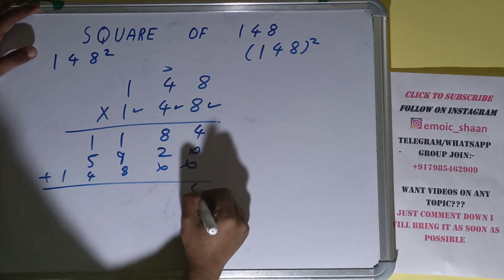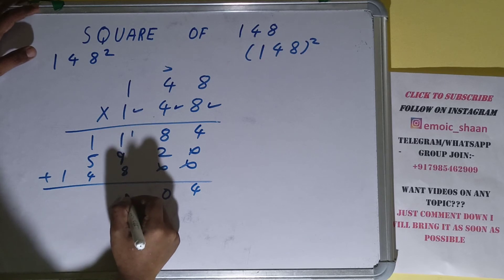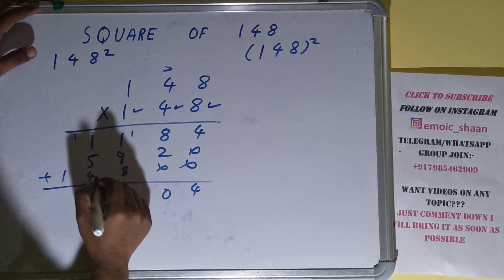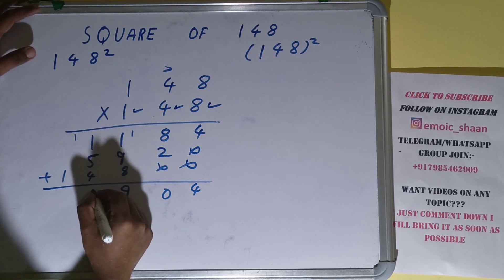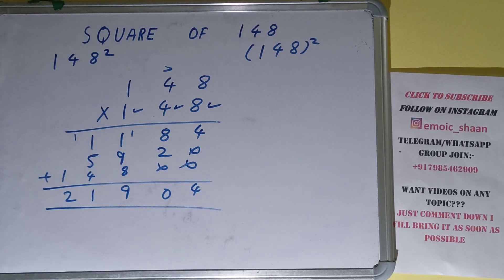Just add them all: 4, 0, 10, 11, 8, 9, 1, 1, 1, 2. The answer will be 21,904. That will be the square for the number 148.